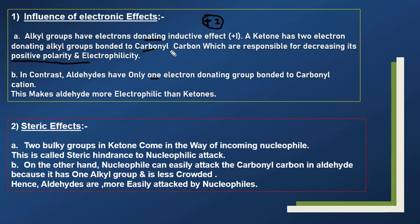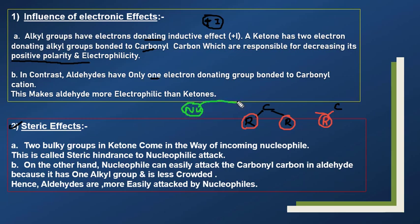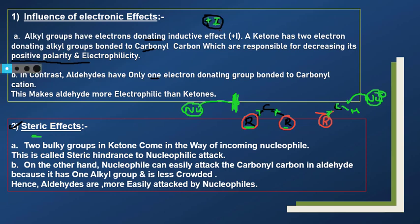Ab steric effect dekhte hain. Ketone mein 2 R groups hain, aldehyde mein 1 R group. Jab nucleophile attack karta hai, ketone mein 2 R groups ki wajah se zyada crowding hoti hai — it becomes more hindered for the nucleophile to attack. Aldehyde mein less crowding hai, so nucleophilic attack is easier. Yahi positive inductive effect aur steric effect explain karta hai ki aldehydes more reactive kyun hain. Take a screenshot for reference.